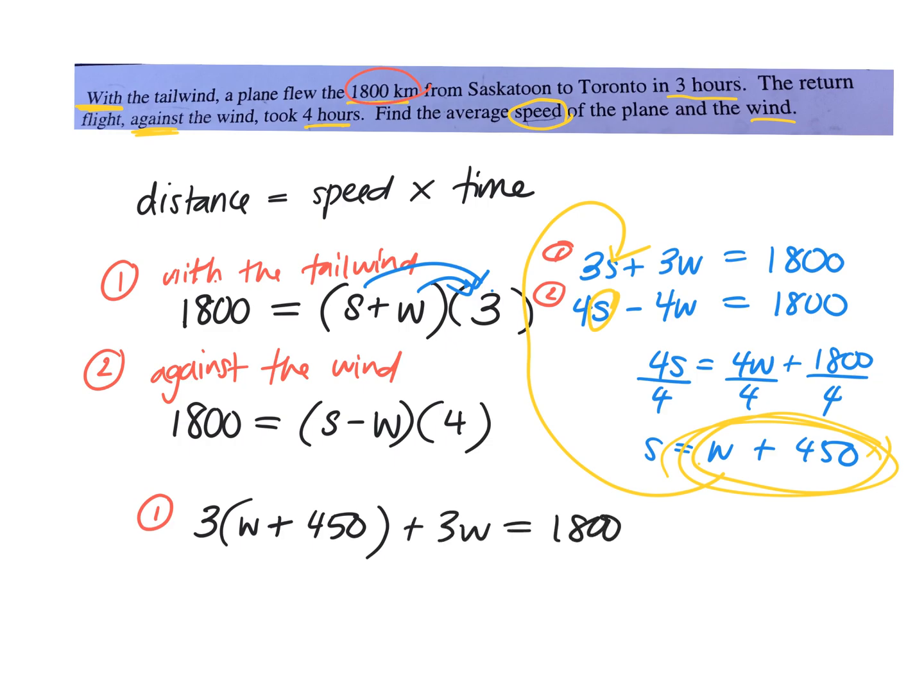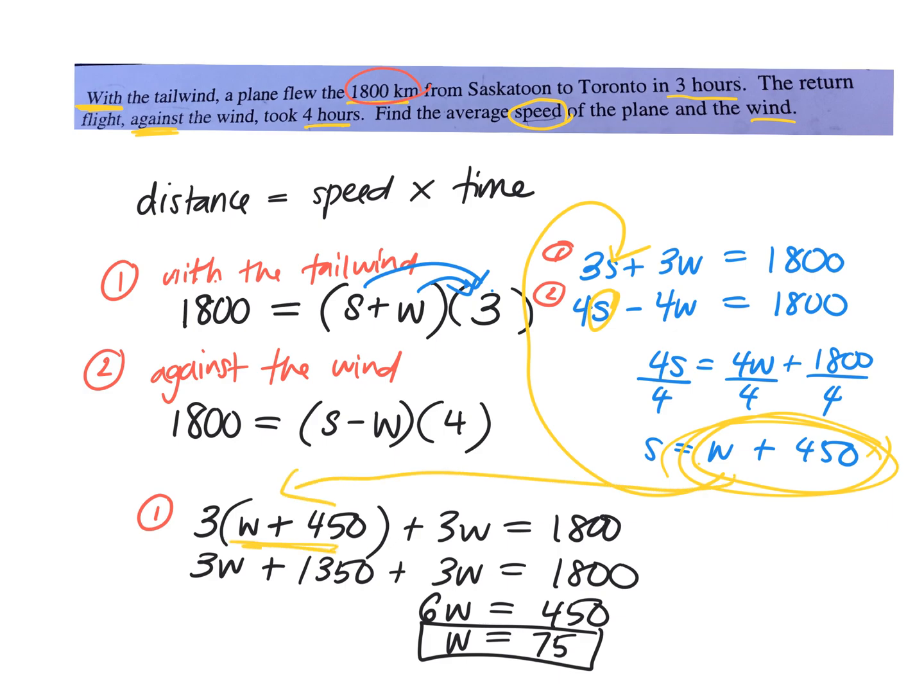So now you're solving for w, right? Distribute. So equals 1,350 plus 3w equals 1,800. So 6w equals 450. So what did you get for w? Did I get a 0? Did you get 75? So here I plugged in the w plus 50 for s. That was s.